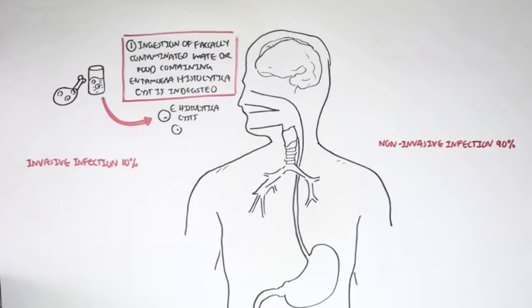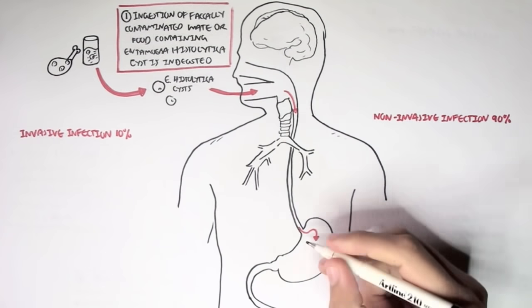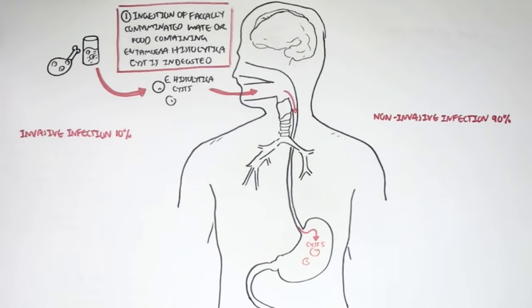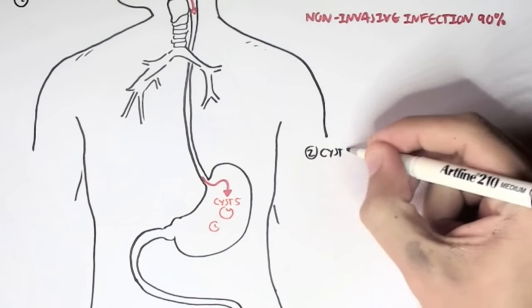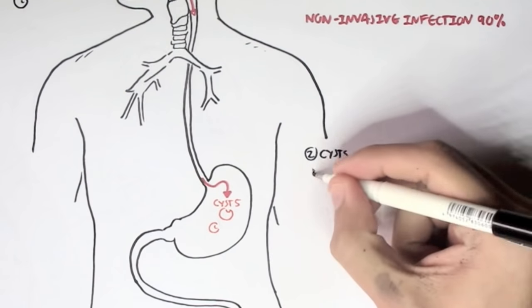The cysts will move through the mouth, down the esophagus, into the stomach. Here, the cysts are in the stomach. The cysts are resistant to the gastric environment and just pass through towards the small intestine.